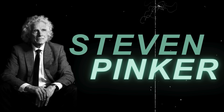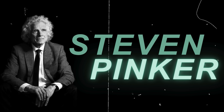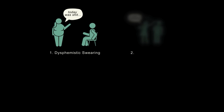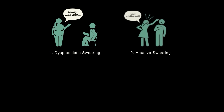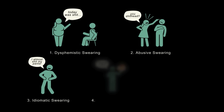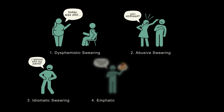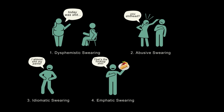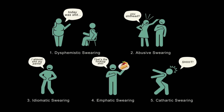Steven Pinker, a prominent cognitive scientist and linguist, identifies five different functions of swearing in his research: dysphemistic swearing about a negative situation or subject; abusive swearing, which are insults; idiomatic swearing for casual conversation; emphatic swearing to emphasize statements with emotion; and cathartic swearing as reflective responses to pain or stress.